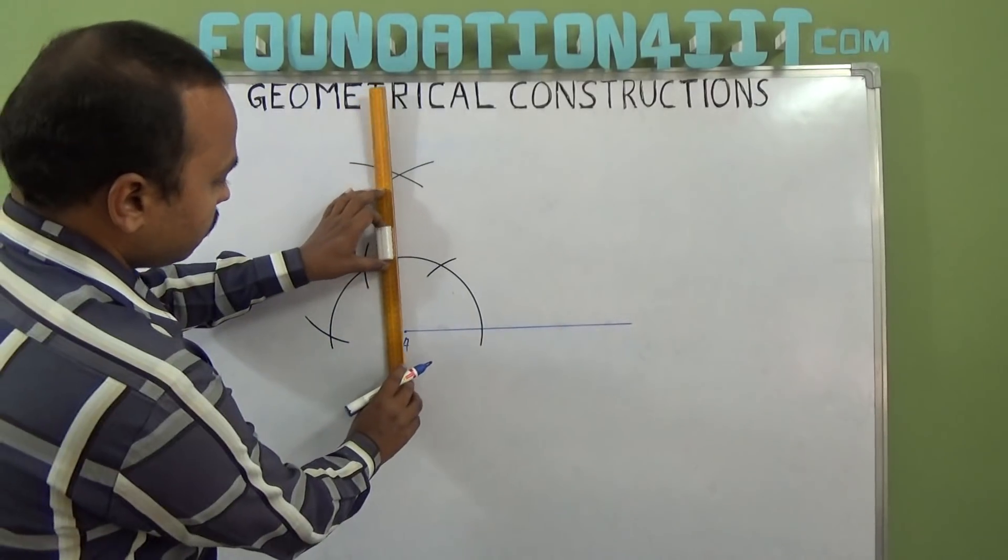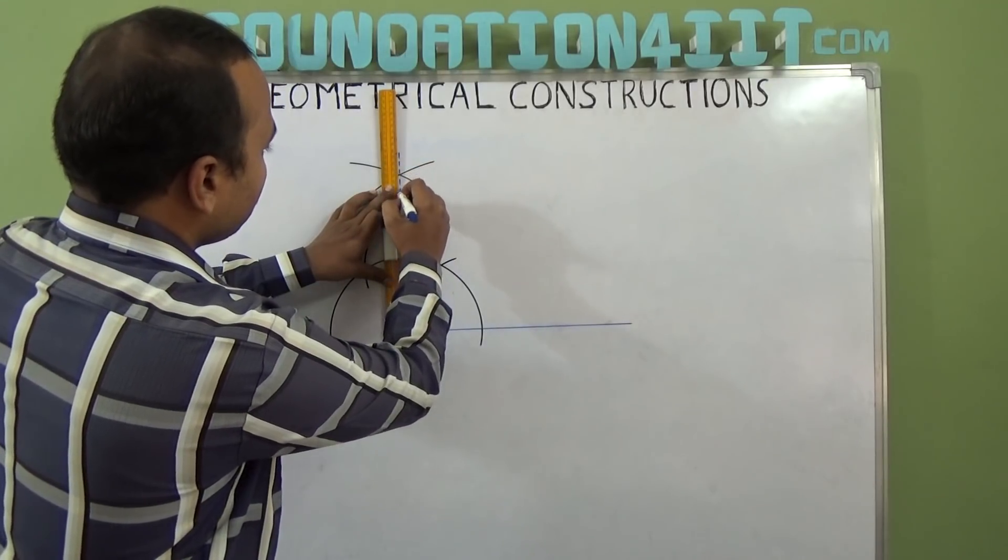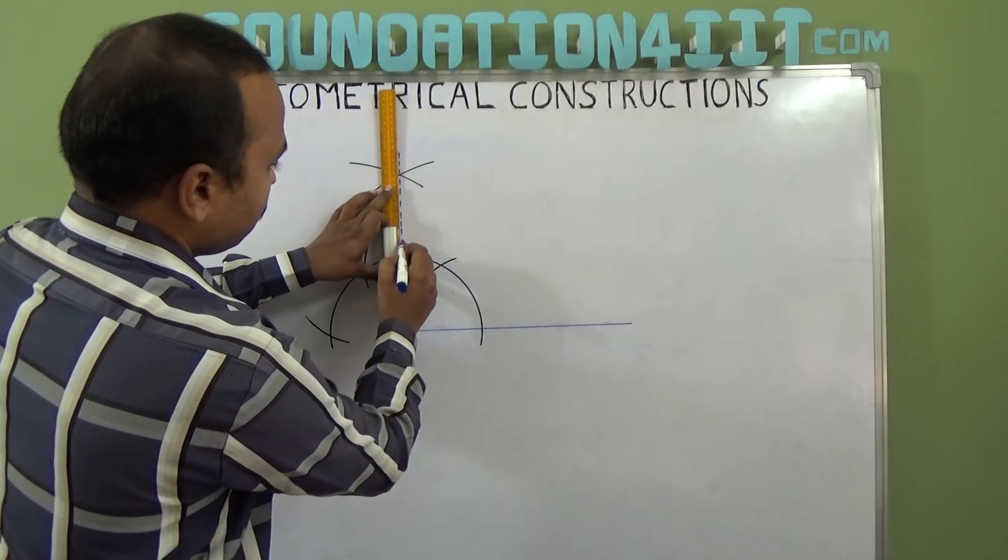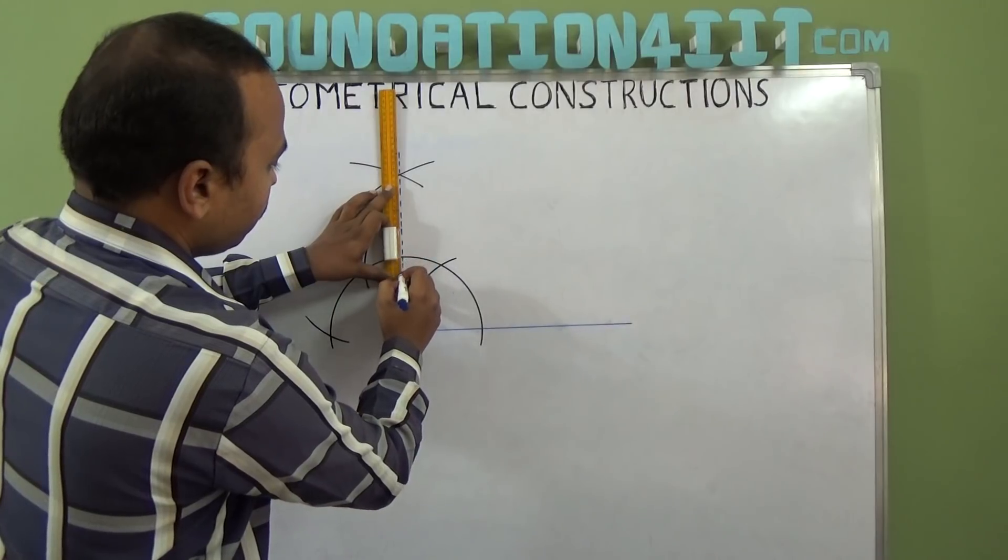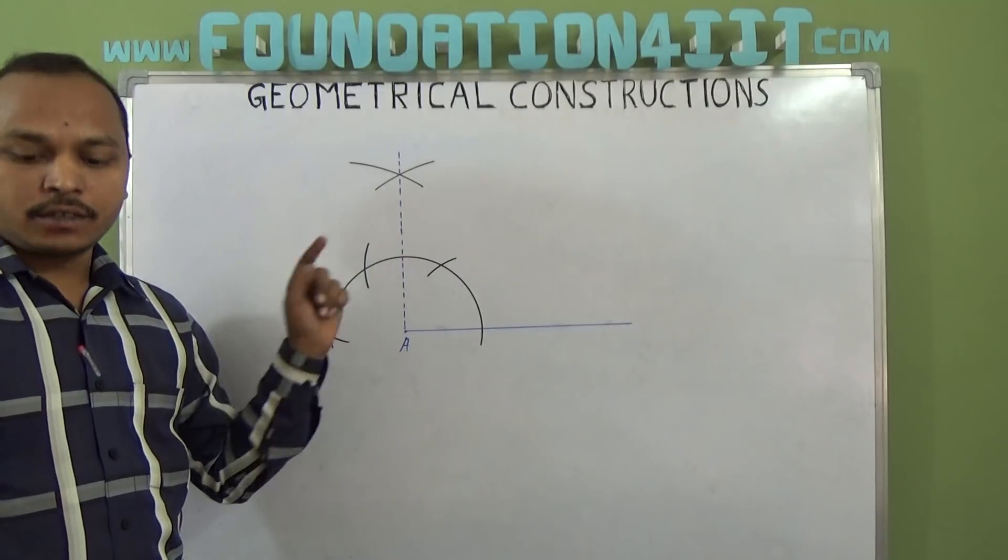Now if you join point A and this point, it will meet at one point. This is where it touches—that is 90 degrees.